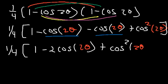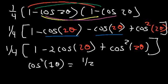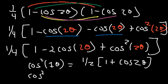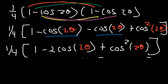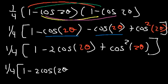We can apply the power reducing formula again to cosine squared 2θ. The formula for cosine squared of one angle is one-half times (1 plus cosine of double that angle), so cosine squared 2θ becomes one-half times (1 plus cosine 4θ). So now we have one-fourth times [1 minus 2 cosine 2θ plus one-half times (1 plus cosine 4θ)].